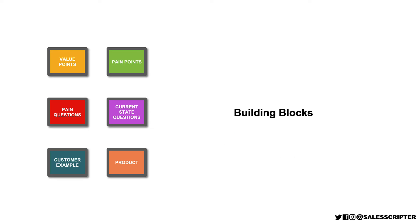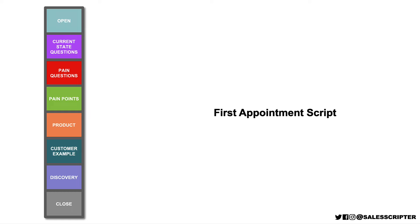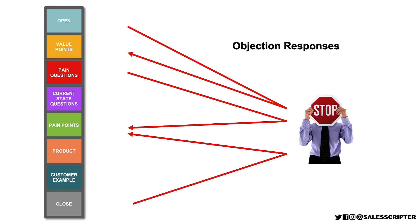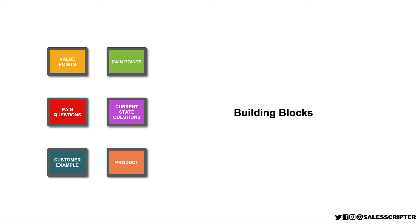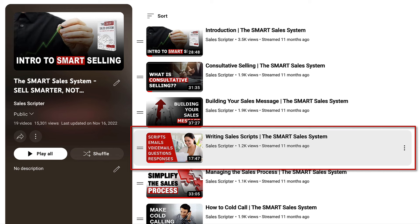Going through that step-by-step process, each step creates what we would refer to as building blocks. And you can use those building blocks to create a cold call script, an appointment script, a cold email campaign, voicemail messages, and objection responses. There are a lot of different documents that we can create with all of those different building blocks. I don't want to take time in this video to show you what all of those different documents look like — first of all it would make this video extremely long, and second of all I've already done that in another video. If you want to see a lot of the different combinations that you can create with those building blocks and your sales message, all you have to do is go to this playlist on our YouTube channel — the Smart Sales System, Sell Smarter Not Harder. Video four is titled Writing Sales Scripts. That video basically shows you how to mix and match all those building blocks to create a lot of different documents. I'll include a link to that in the description below.